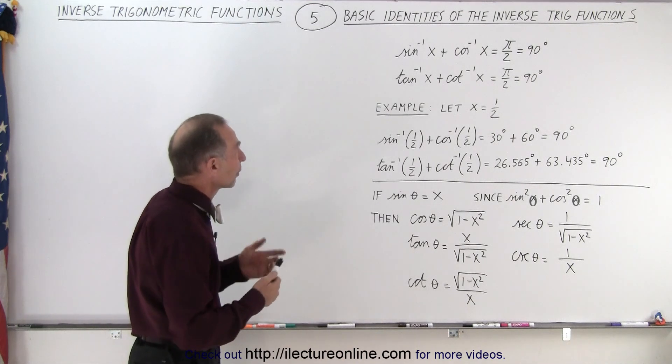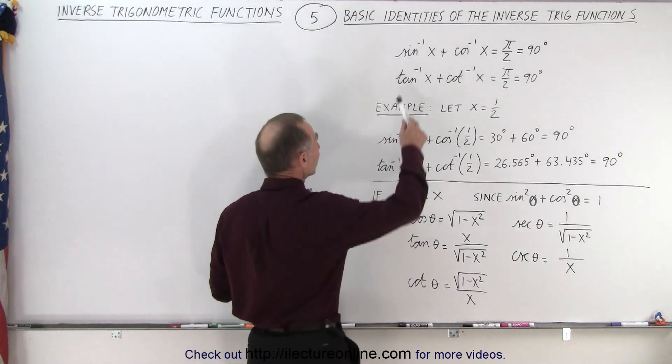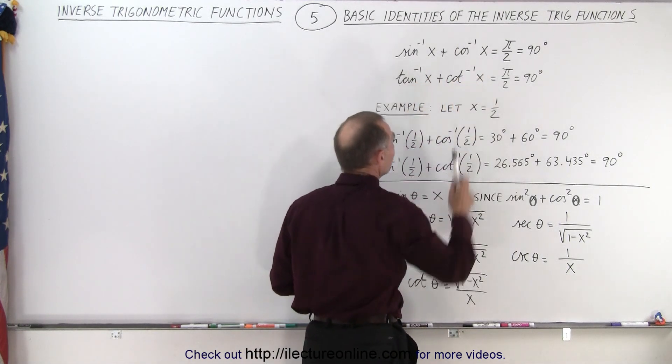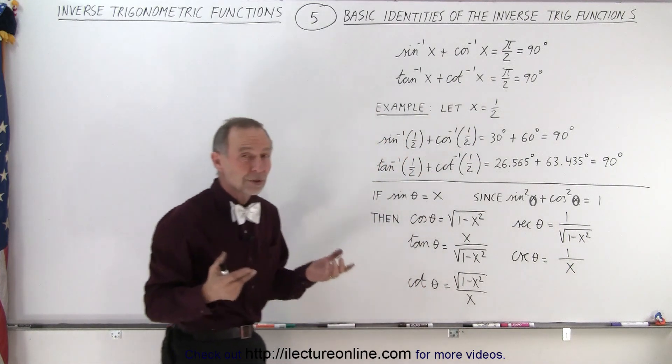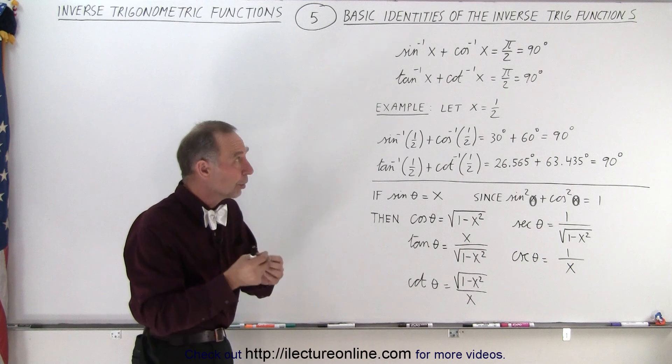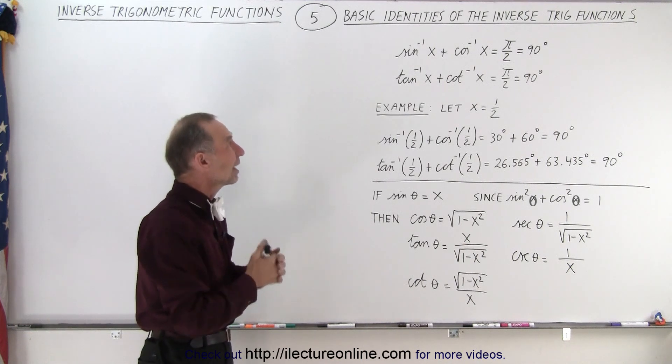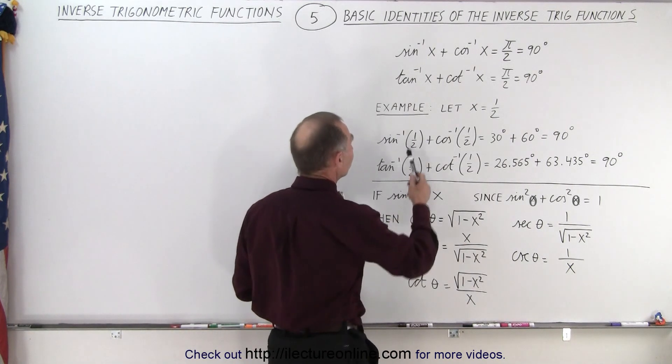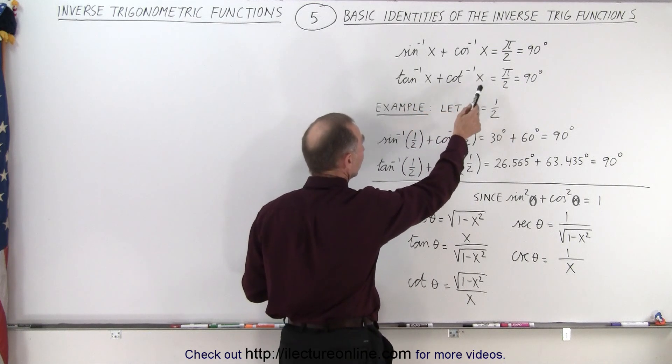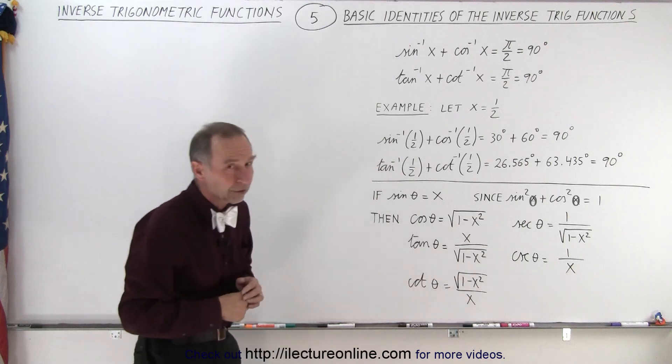So here the first two basic ones are the following. The inverse sine of x plus the inverse cosine of x is equal to π over 2 or 90 degrees. When you add the inverse sine and inverse cosine of the same number you'll get 90 degrees. Same with the tangent and the cotangent. If you add the inverse tangent of x plus the inverse cotangent of x you also will get π over 2 or 90 degrees.